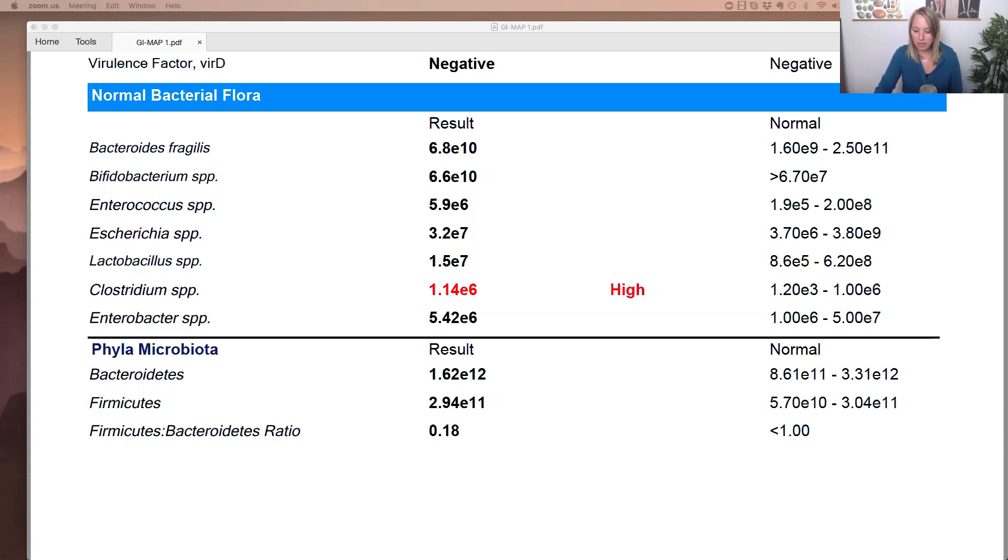The next ones we'll talk about are Enterococcus and Escherichia. So these ones are a bit of a double-edged sword. Yes, they are beneficial. They help maintain the normal flora of the gut, but they do become opportunistic when they overgrow. So if you see these high, it typically will indicate a dysbiosis that there is an imbalance in the flora because these two, when they're high, can actually crowd out some of the other normal bacteria flora.